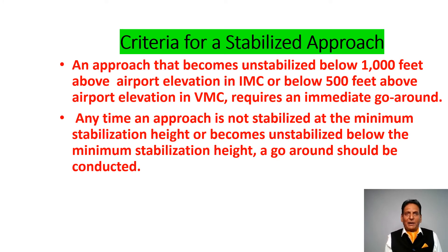An approach that becomes unstabilized below 1,000 feet above airport elevation in IMC, or below 500 feet above airport elevation in VMC, requires an immediate go-around. Any time an approach is not stabilized at the minimum stabilization height, or becomes unstabilized below the minimum stabilization height, a go-around should be conducted.